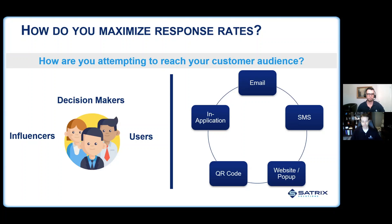QR codes are an interesting distribution method. QR codes have been around for a long time but haven't been utilized as well as they could be. Basically, it's a graphic visualization of a web link — you'll see an example of this later in our talk when we offer our free ebook. You just point your cell phone's camera to it and it triggers the URL and takes them directly to the survey. This is great for transactional surveys at specific locations. We've used this for clients including SaaS companies in various ways to gather feedback at different stages. It's another great way to reach people whose inboxes may be too packed to see everything coming in.